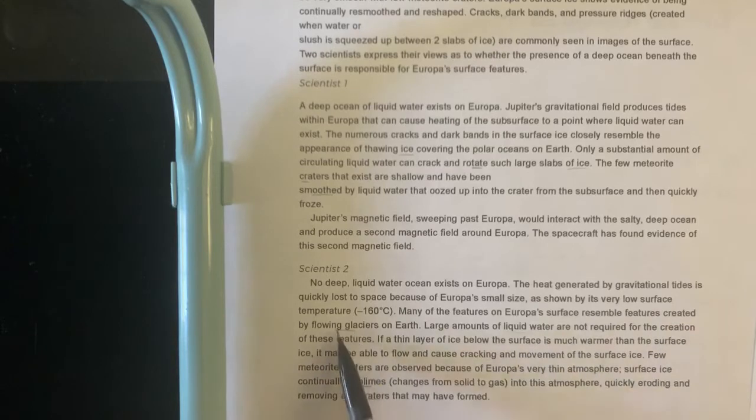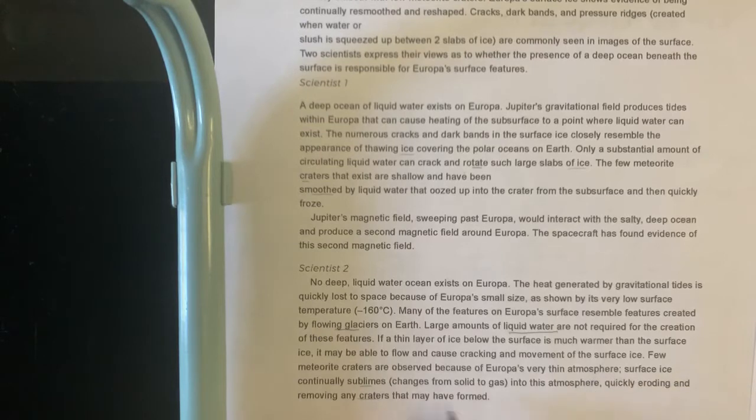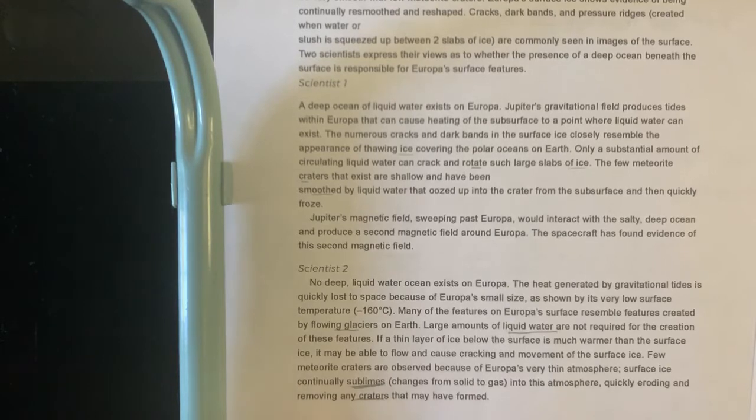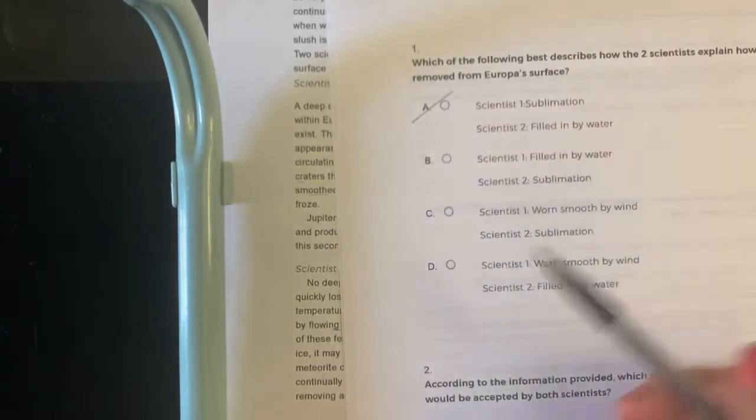The surface features resemble flowing glaciers. Large amounts of liquid water are not required and there's thin layers of ice. Few meteorite craters are preserved because of Europa's very thin atmosphere. Surface ice eventually sublimes into this atmosphere, quickly eroding and removing any craters. So we know Scientist 2 is sublimation, so we can cross out A and D.